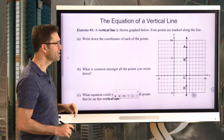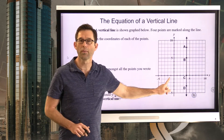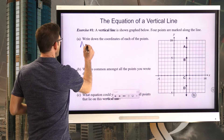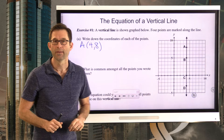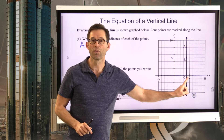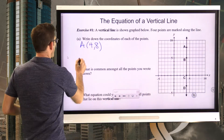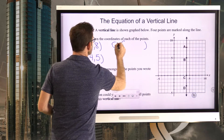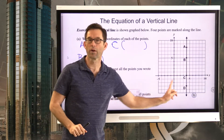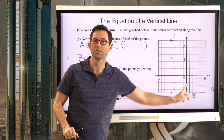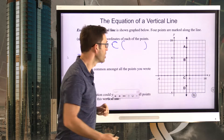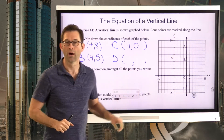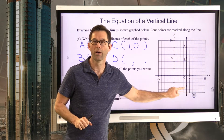Letter A: we go four units to the right and eight units up, so letter A has coordinates of four comma eight. Letter B: four units to the right and five units up, so letter B has coordinates of four comma five. Letter C: four units to the right but no distance vertically, so that's four comma zero. And letter D is going to be four comma negative three.